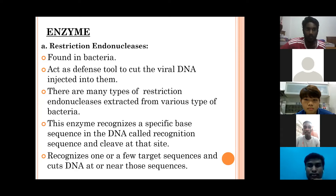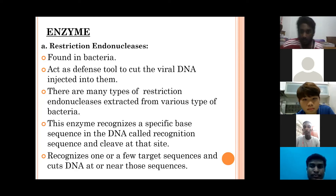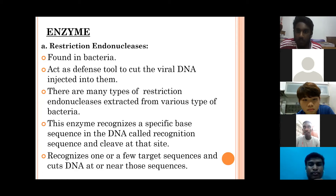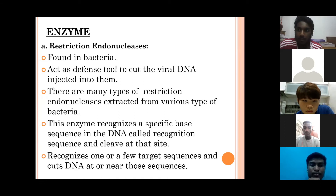Restriction enzymes are DNA-cutting enzymes. The enzyme recognizes a specific base sequence in the DNA, called a recognition sequence, and cleaves at that site. It recognizes one or a few target sequences and cuts the DNA at or near those sequences, producing discrete DNA fragments. Many restriction enzymes make staggered cuts, producing ends with single-stranded DNA overhangs, while some produce blunt ends. Each enzyme has a specific manner of cutting, and there are two types: sticky end and blunt end.